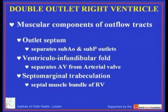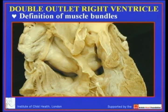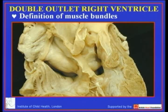The third crucial structure of the outflow tracts is the septomarginal trabeculation — the muscular structure which reinforces the septal surface of the right ventricle with a body and with anterior and posterior limbs. In the normal heart, the supraventricular crest inserts between these arms, but in the hearts we are discussing today it is the interventricular communication that occupies between the limbs of the septomarginal trabeculation. Let me show you an example of double outlet right ventricle coexisting with tetralogy of Fallot and bilateral infundibular structures.